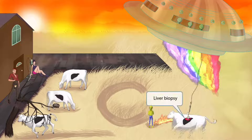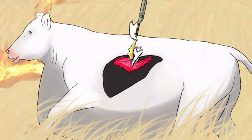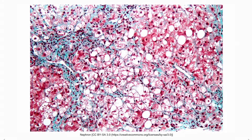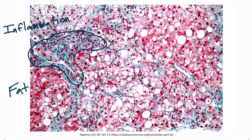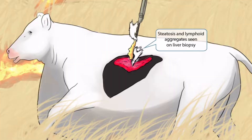The aliens got hungry and decided to harpoon the fattest cow they could find before taking off. This harpoon of the fat cow represents the liver biopsy in patients with chronic hepatitis C. As the harpoon pulls out, it pulled with it some fat and some white fur. This is a trichrome-stained liver biopsy — notice two things: the inflammation from lymphoid aggregates, and the fat seen as large vacuoles. So the harpoon pulling out white fur and yellow fat stands for steatosis and lymphoid aggregates seen on liver biopsy.